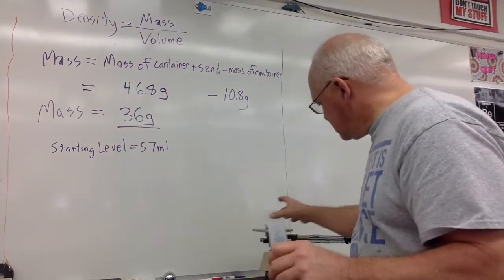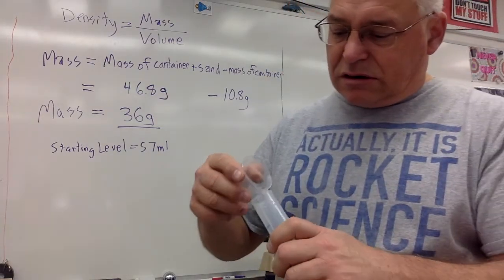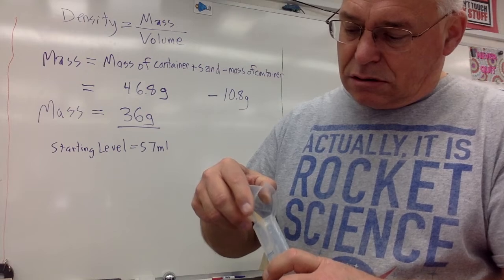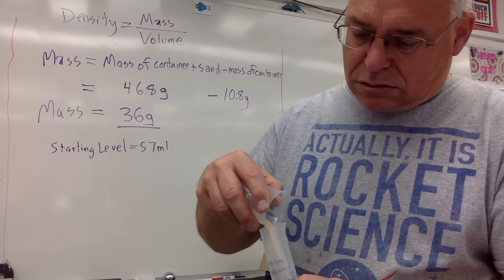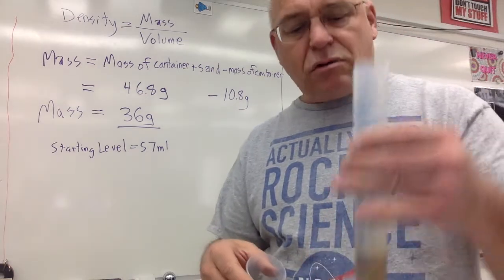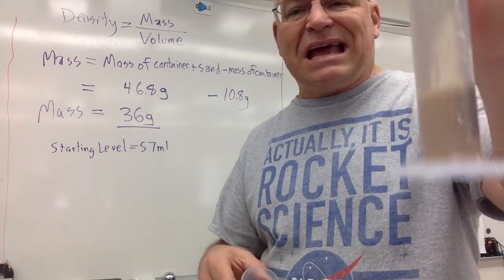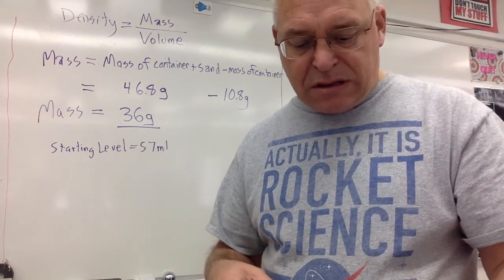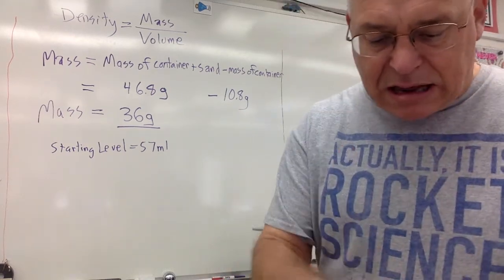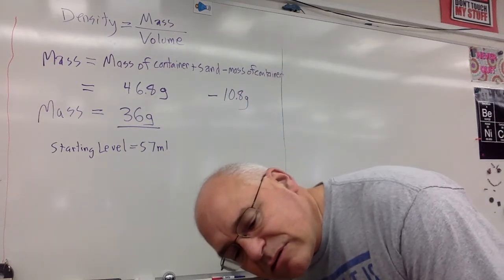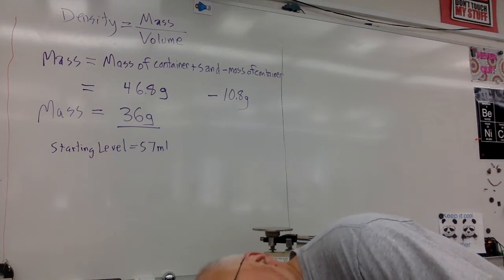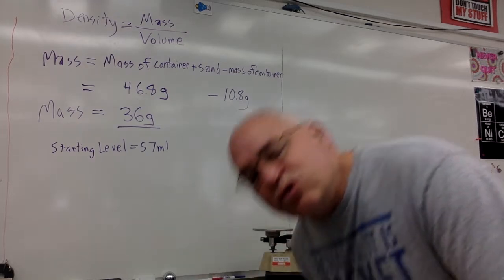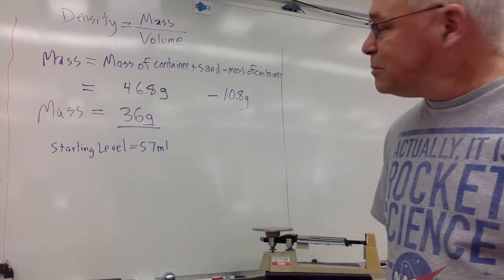Now, I'm going to put the sand in the graduated cylinder. So, now we've got the sand and the water in the graduated cylinder. And I'm going to read that now. The sand brought the level of the water in the graduated cylinder up to 70. 70 milliliters.